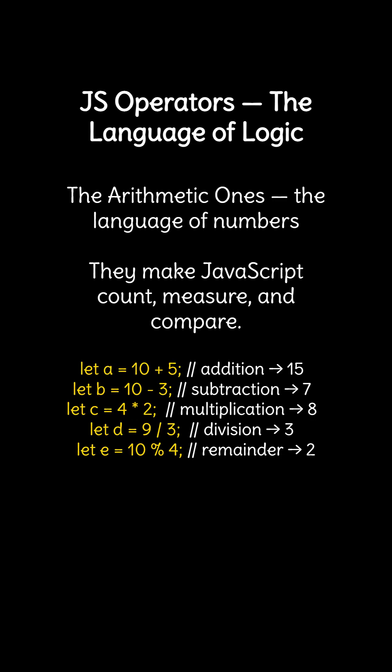And the arithmetic ones — the language of numbers. They make JavaScript count, measure, and compare. Let A equal 10 plus 5, result 15. Let B equal 10 minus 3, result 7. Let C equal 4 times 2, result 8.